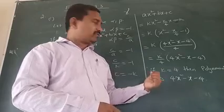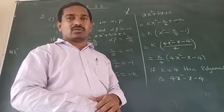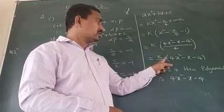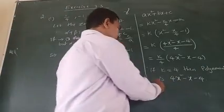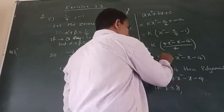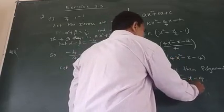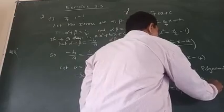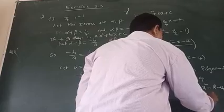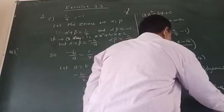So we can fix k equal to four. If you take k equal to eight, we get eight x square minus two x minus eight, which simplifies. Depending on the k values, we can get different forms.